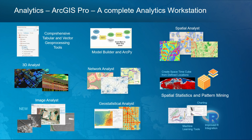Moving on to analytics, ArcGIS Pro is a complete analytics workstation with Model Builder, ArcPy, and a comprehensive set of tools — starting with tabular and vector geoprocessing and extending all the way to geostatistics, spatial statistics, and pattern mining. These tools work in Pro and also power our services. For example, in the case of Network Analyst, the routing services and logistics services that run in ArcGIS Online use the same code and the same functional capabilities, and we're able to leverage it in Pro, in the runtime, and in our services-based models.